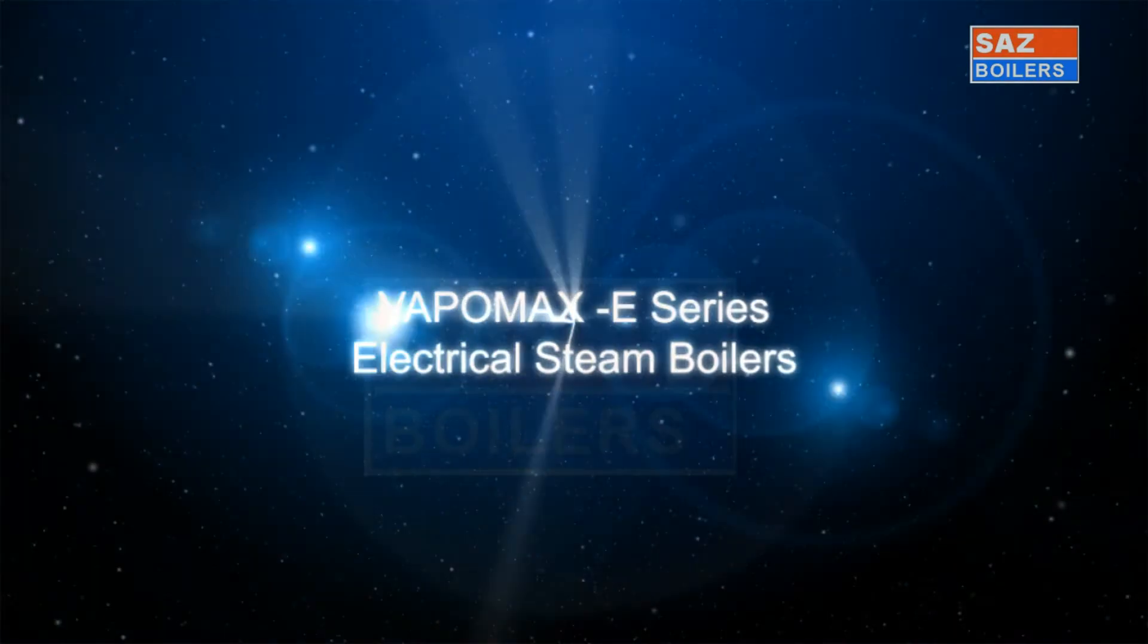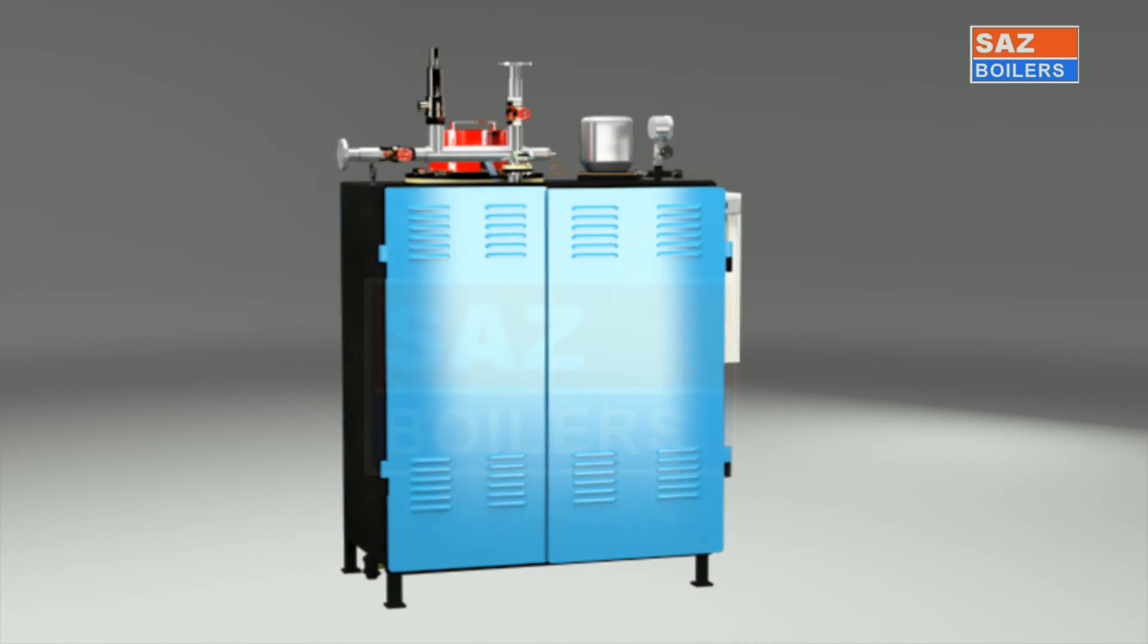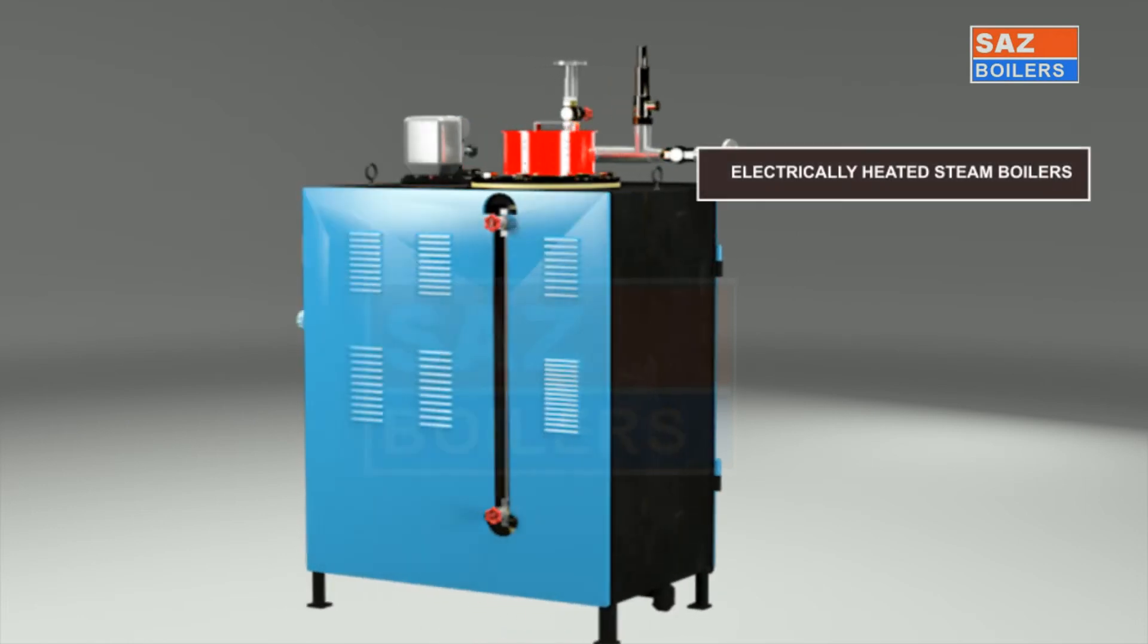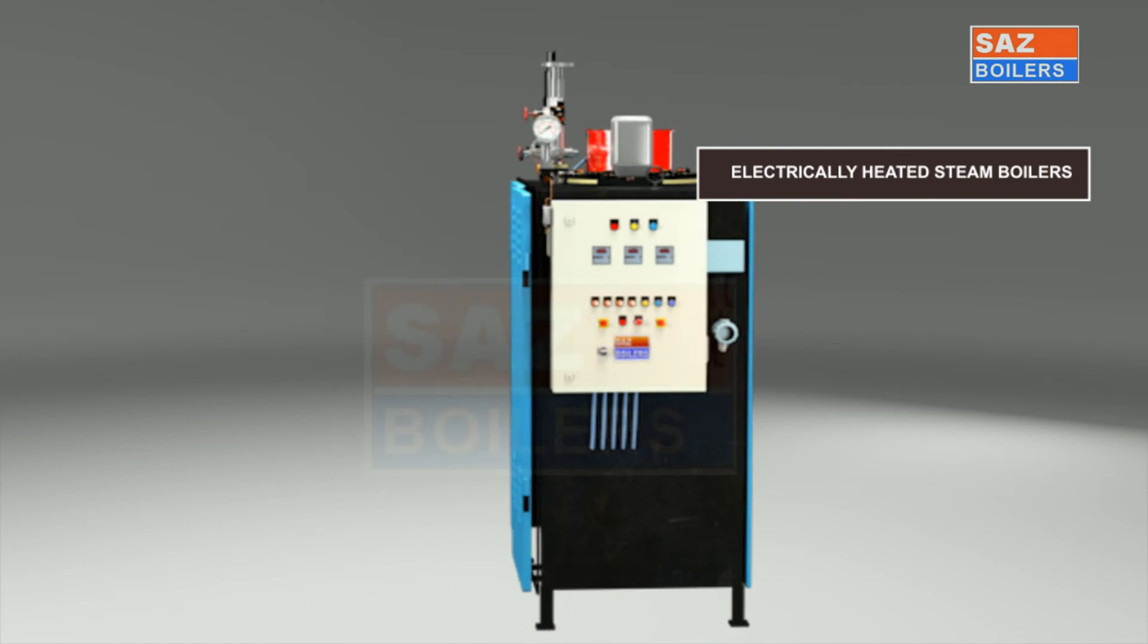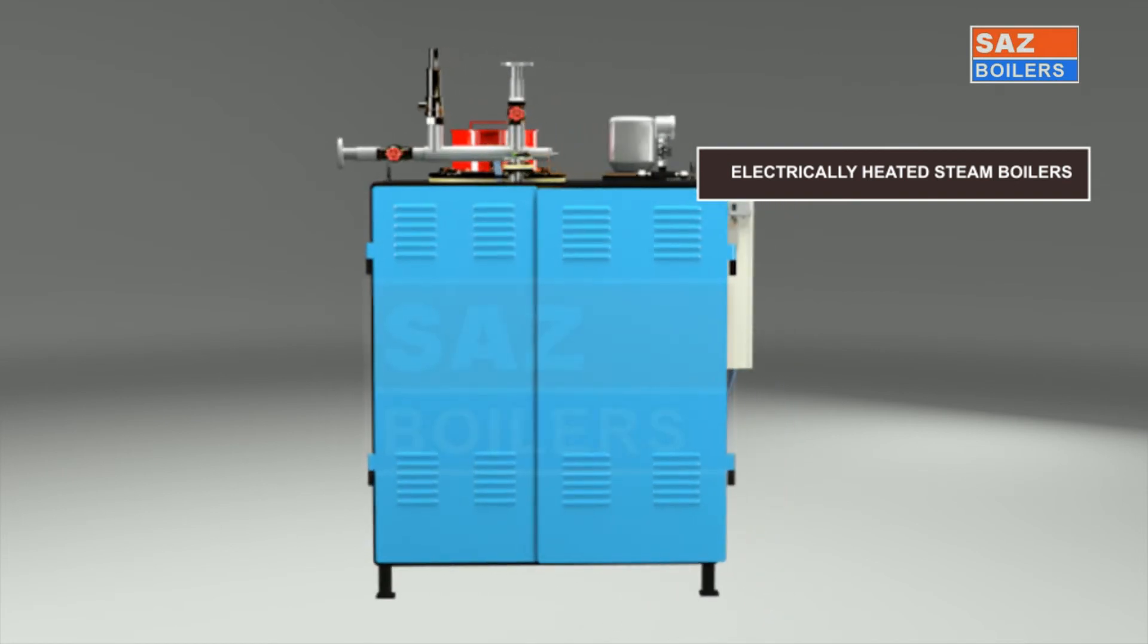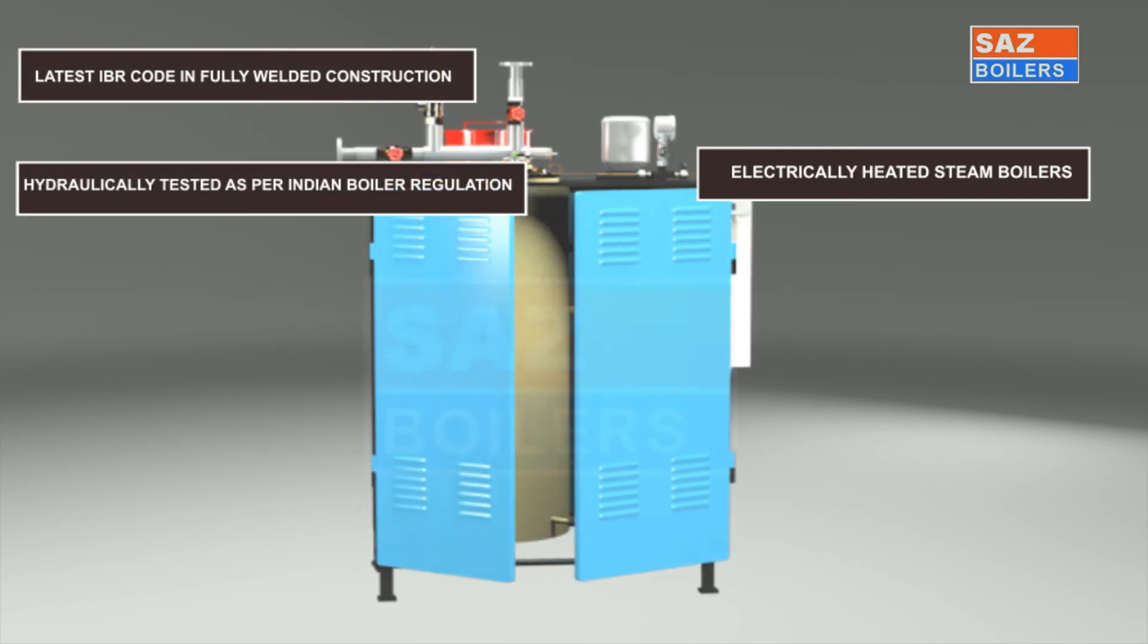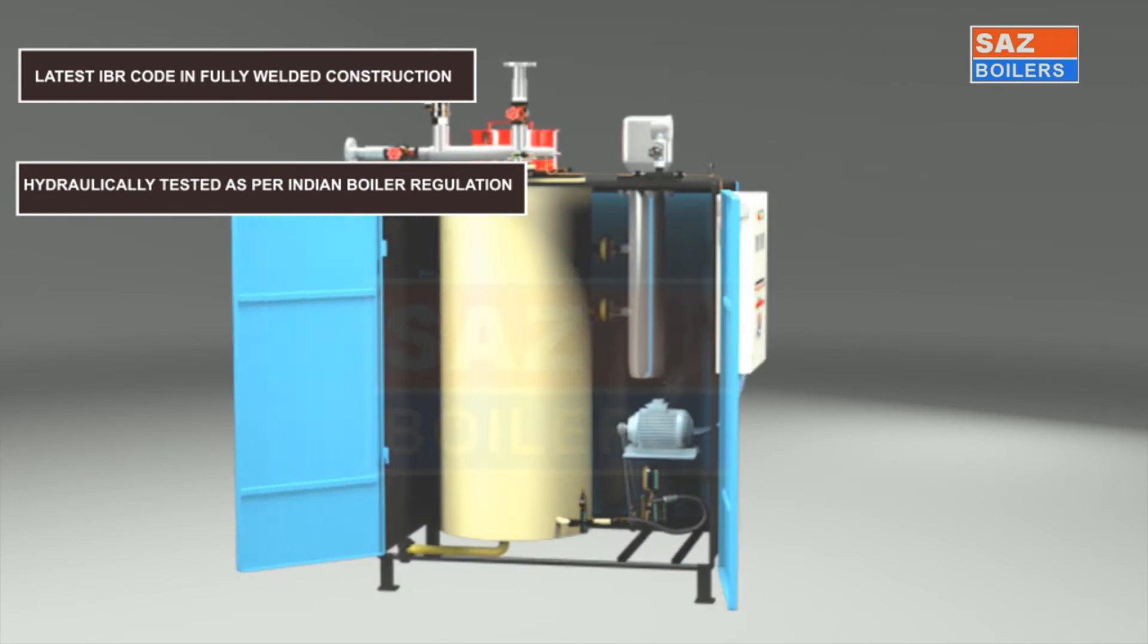The VapoMax E-Series Steam Boilers are electrically heated steam boilers. Electrical tubular heaters are used to generate steam. The boiler is manufactured as per the latest IBR code in fully welded construction and hydraulically tested as per Indian Boiler Regulation or ASME standards.